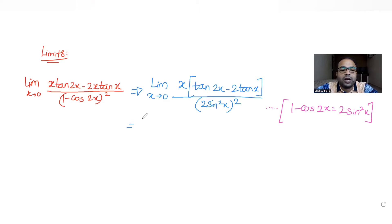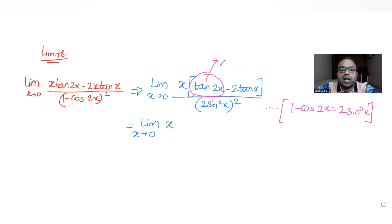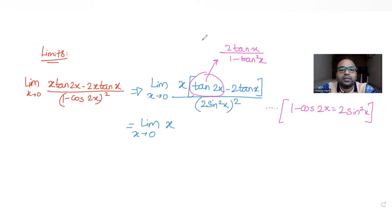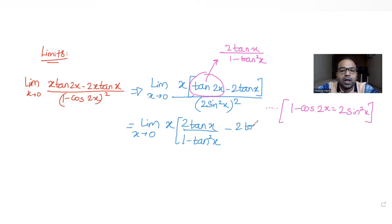So I write 1 minus cos(2x) as 2·sin²(x), the whole square. Further simplifying, I get limit x tends to 0 of x times the numerator. I can again use the double angle formula: tan(2x) can be written as 2·tan(x) upon (1 minus tan²(x)). So I can write the numerator as 2·tan(x)/(1 minus tan²(x)) minus 2·tan(x).